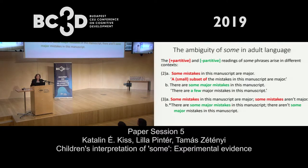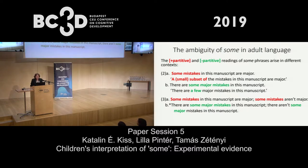First I will show you that 'some' is indeed ambiguous. The two readings of 'some' arise in different contexts. In example 2a, 'some mistakes in this manuscript are major' — here 'some mistakes' means a subset of the mistakes, so this is the partitive 'some.' In 2b, 'there are some major mistakes in this manuscript' — this 'some' is non-partitive, and simply means there are a few major mistakes in the manuscript.